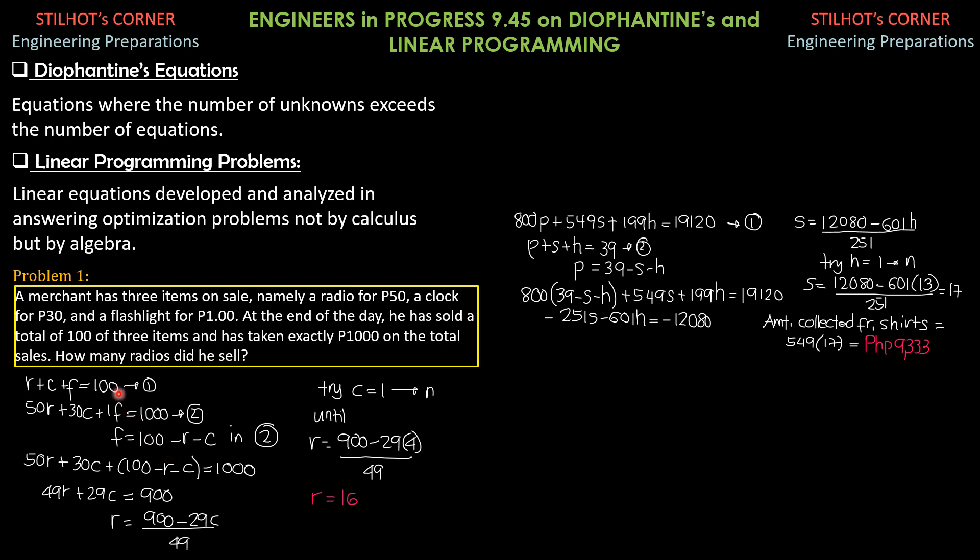From equation 1, we know that F is 100 minus R minus C. So, we substitute this in equation 2. So, 50R plus 30C plus F, which is quantity 100 minus R minus C equals 1,000. So, 50R minus R is 49R.